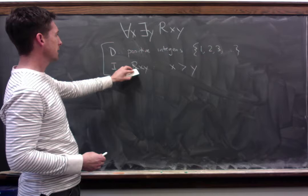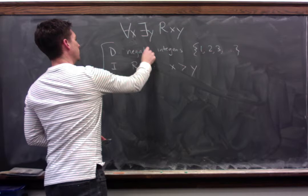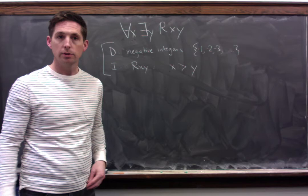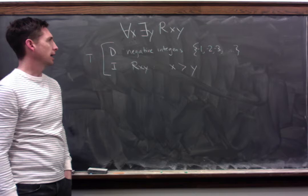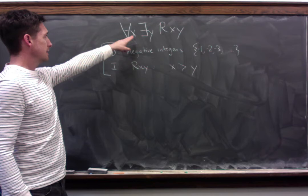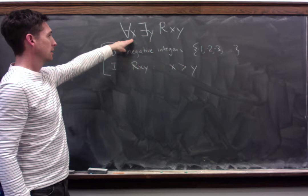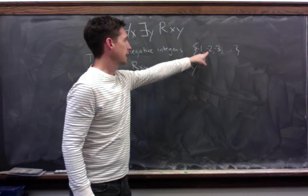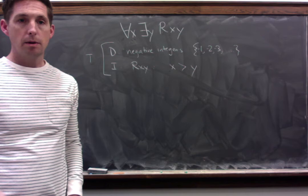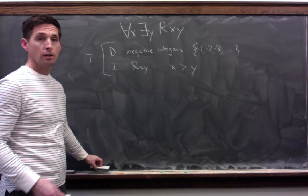Let's see what happens if we leave the interpretation the same but change our domain to the negative integers: negative one, negative two, negative three, and so on, infinitely into the negative numbers. If you think about this, you'll see this is actually true now. So by changing the domain and keeping the interpretation the same, we were able to change the formula from false to true. Why is it true? This says every member of our domain is greater than some member of our domain. That's true because negative one is greater than negative two, negative two is greater than negative three — as you go down, there's always a lesser number, so every member of our domain is greater than some member. So in Universe 2, it's true.